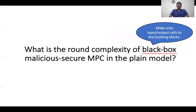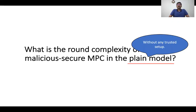By black box protocols we mean those protocols that only make input-output calls to the underlying cryptographic building blocks, and these protocols are independent of how these building blocks are implemented. Generally black box protocols tend to be much more computationally efficient than their non-black box counterparts, and hence obtaining such a black box protocol is viewed as a first step towards achieving computational efficiency. By plain model we mean a model that does not assume any form of trusted setup — specifically, no common random or reference strings and no correlated randomness shared between the parties.